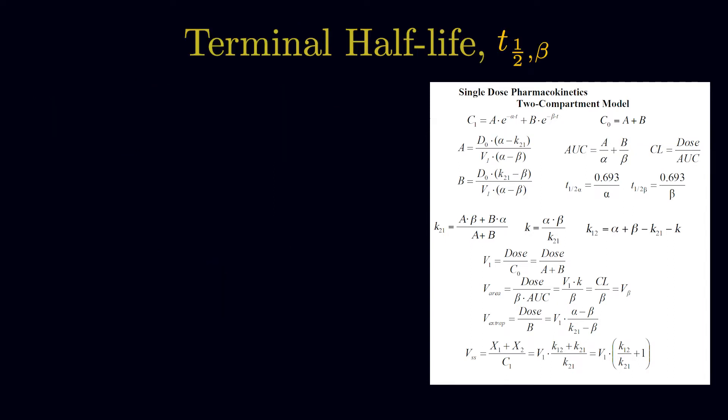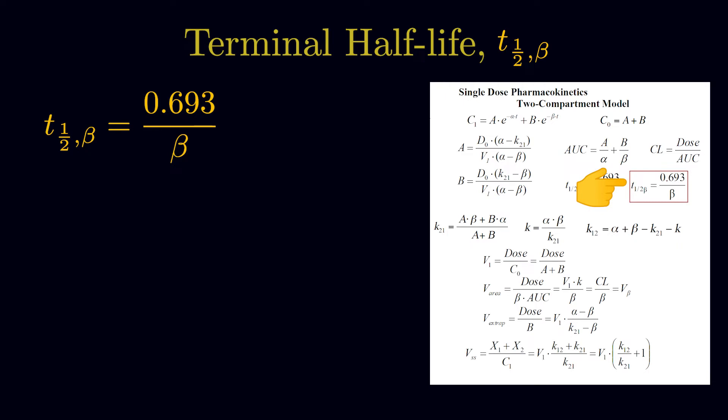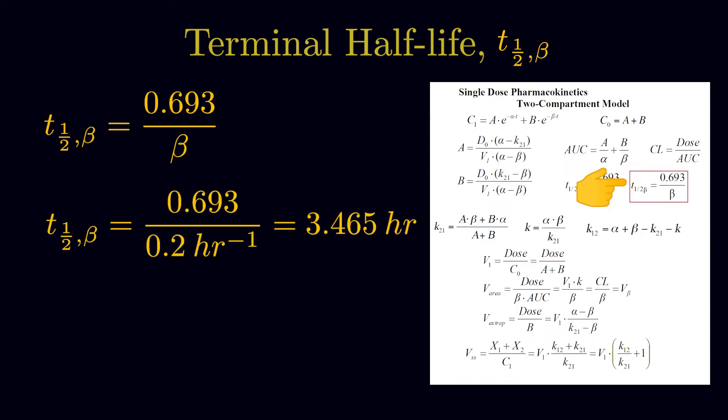Next, we need to solve for the terminal half-life of the drug. The half-life is equal to ln of 2, or 0.693, divided by K. Since the question specifically asks for the terminal half-life, we use the beta K, as that represents the elimination phase, while alpha represents distribution. Therefore, 0.693 divided by 0.2 gives a terminal half-life of 3.5 hours.